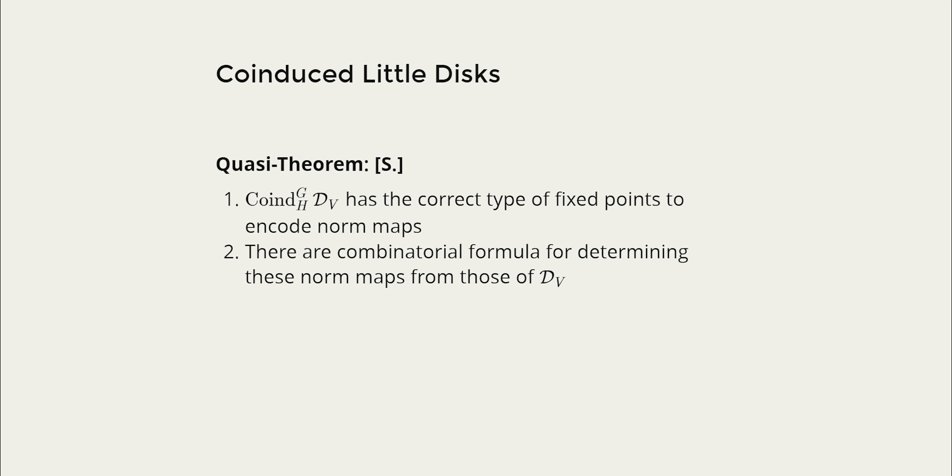So I haven't mentioned this yet but whether an N_K operad encodes norm maps or not depends on what kind of fixed points it has. It turns out that the coinduced little disk operads do have the correct fixed points. Moreover you can figure out formulas that describe these fixed points in terms of the fixed points of the uninduced little disk operad. So this lets you figure out what kind of norms the coinduced little disk operad parameterizes from the original ones.